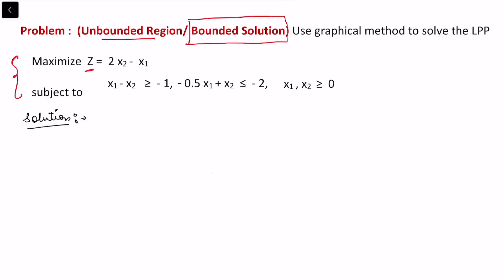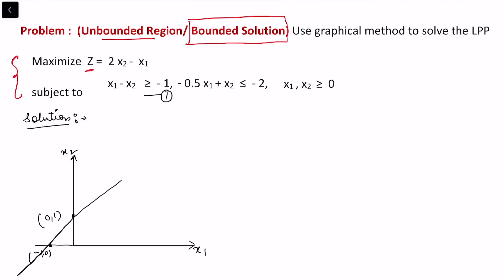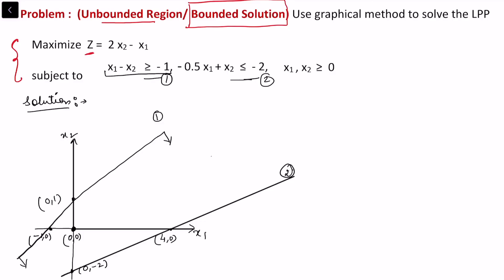Now considering another problem. Draw the x1 and x2 axes. The first constraint is x1 minus x2 greater than or equal to minus 1. When x1 = 0, x2 = 1, giving point (0, 1). When x2 = 0, x1 = -1, giving point (-1, 0). Joining these two points gives the first constraint line. The region is the lower side: since (0, 0) gives 0 greater than or equal to -1, which is true, the lower side including the origin is the relevant region.